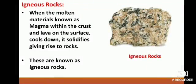We will now study about igneous rocks. When the molten materials known as magma within the crust and lava on the surface cools down, it solidifies giving rise to rocks. These are known as igneous rocks. As these rocks are formed out of the material from the interior of the earth, these are also referred to as primary rocks. Mostly these rocks appear hard and homogenous. These are heavy as well. We do not get fossils in these rocks.